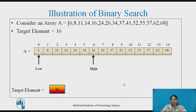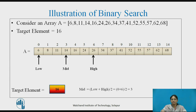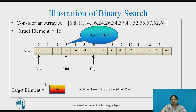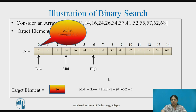With the new positions of low and high, we compute mid again. Low is 0 and high is 6; low is less than high. The new mid is 3. We compare A[mid] with the target element, and the target is greater than A[mid]. So we adjust low by setting it to mid plus 1 in the next iteration.